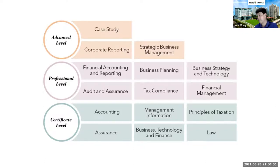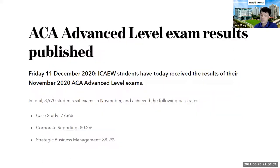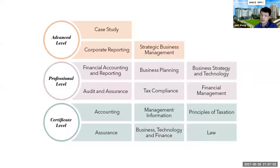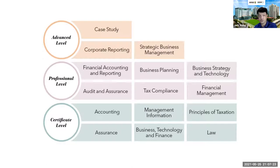ICAEW wants you to be technically competent, objective, and capable of professional judgment, with professional skepticism to represent the public. All professional accountants follow five ethical principles: integrity, objectivity, professional competence, professionalism, and confidentiality.